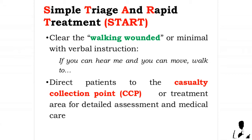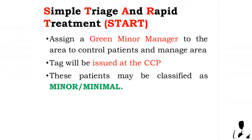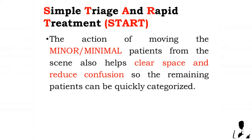Those who will be tagged with a green tag — give the verbal instruction: 'If you can hear me and you can move, walk to the treatment area.' Direct patients to the casualty collection point or treatment area for detailed assessment and medical care. Assign a green minor manager to the area to control patients. A green tag will be issued at the casualty collection point. These patients may be classified as minor or minimal. Moving the minor patients from the scene also helps clear space and reduce confusion so remaining patients can be quickly categorized.